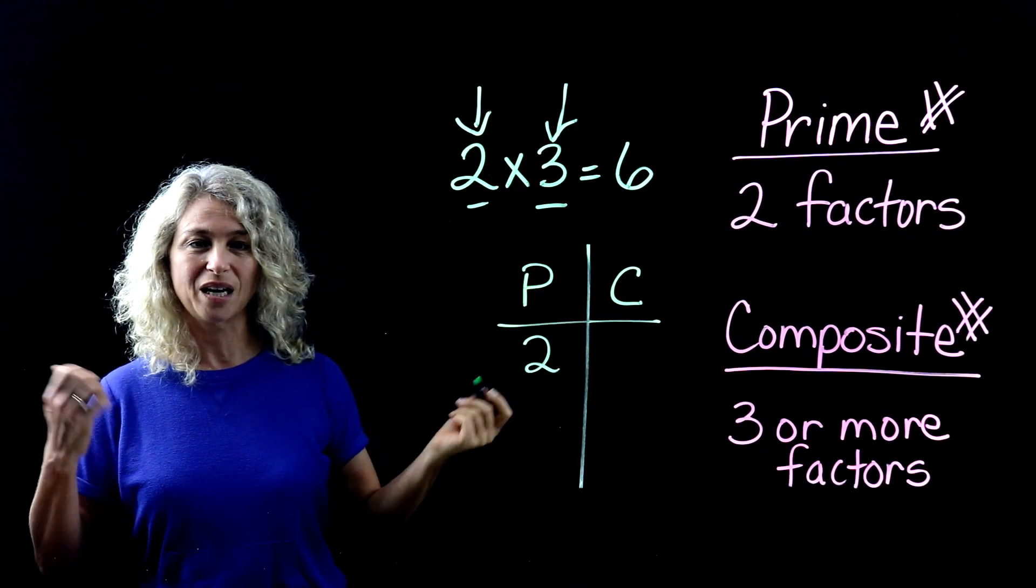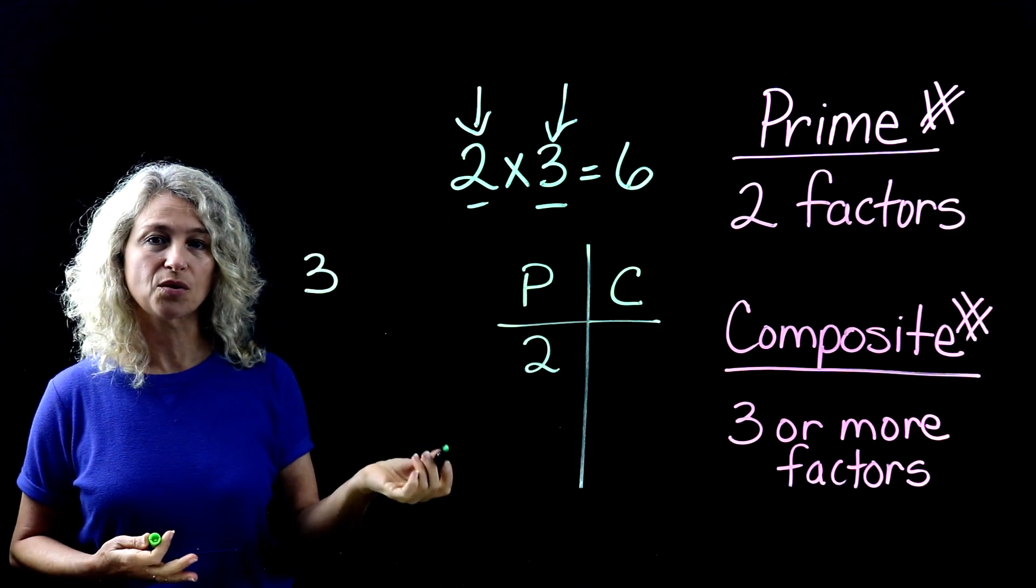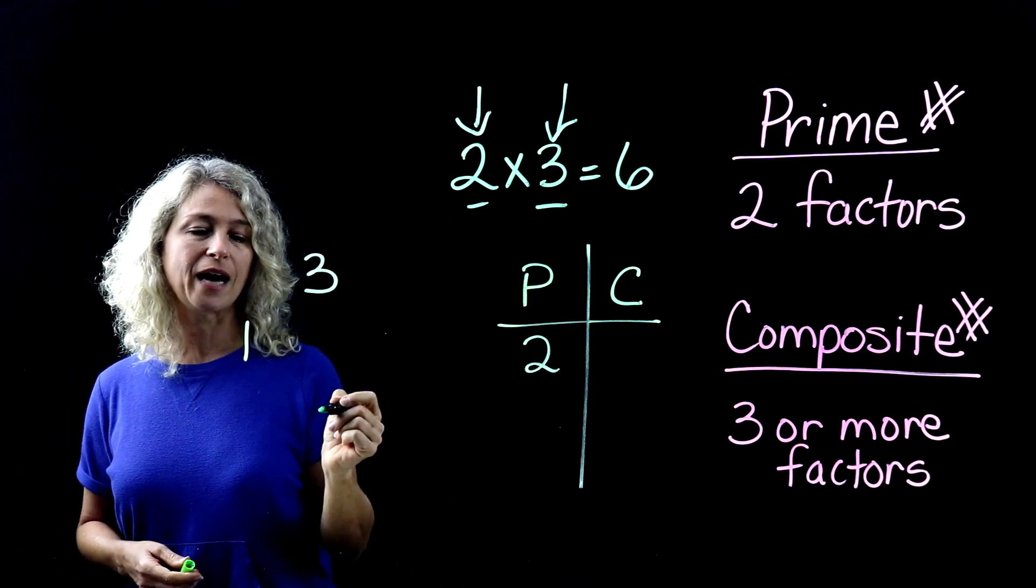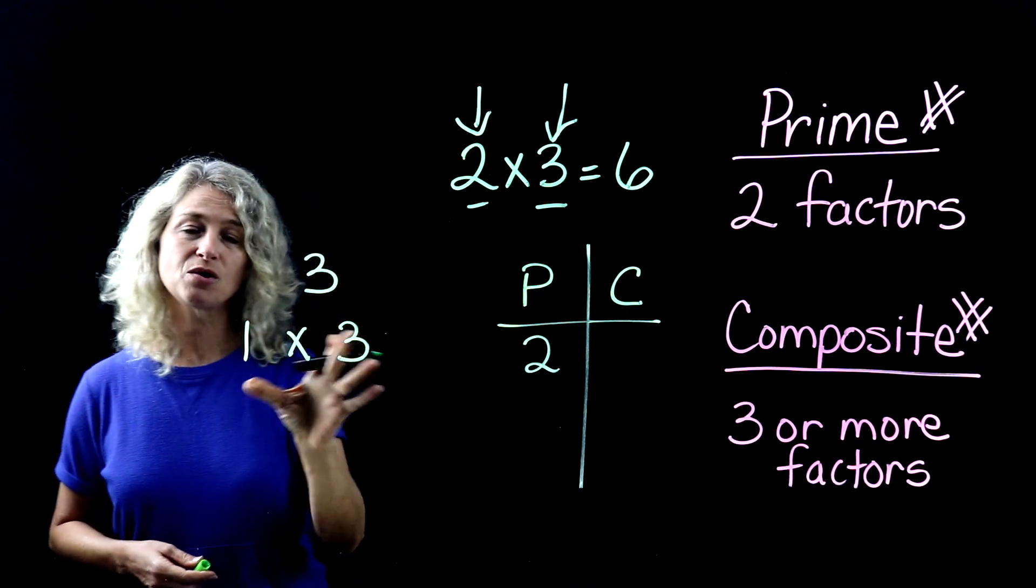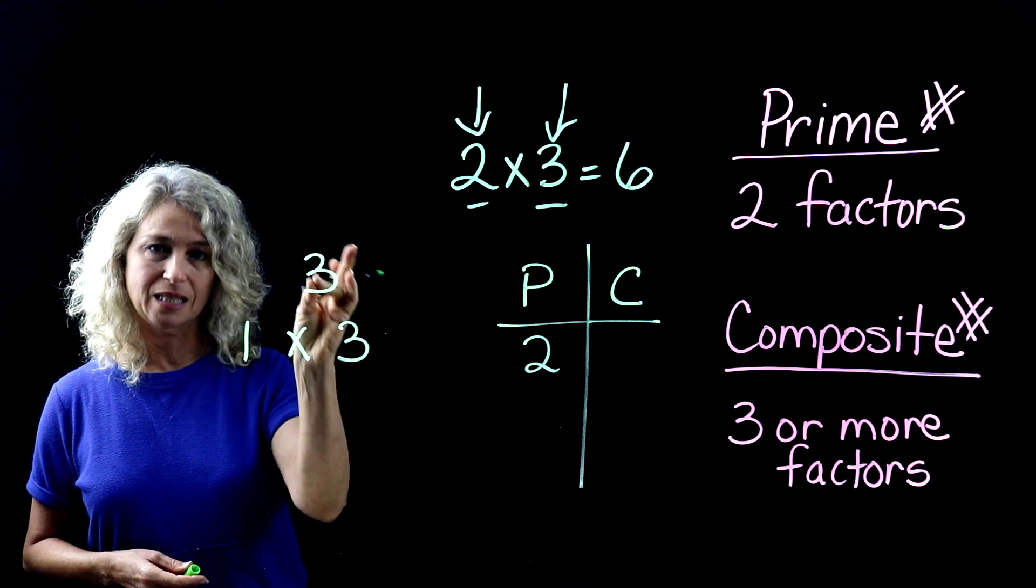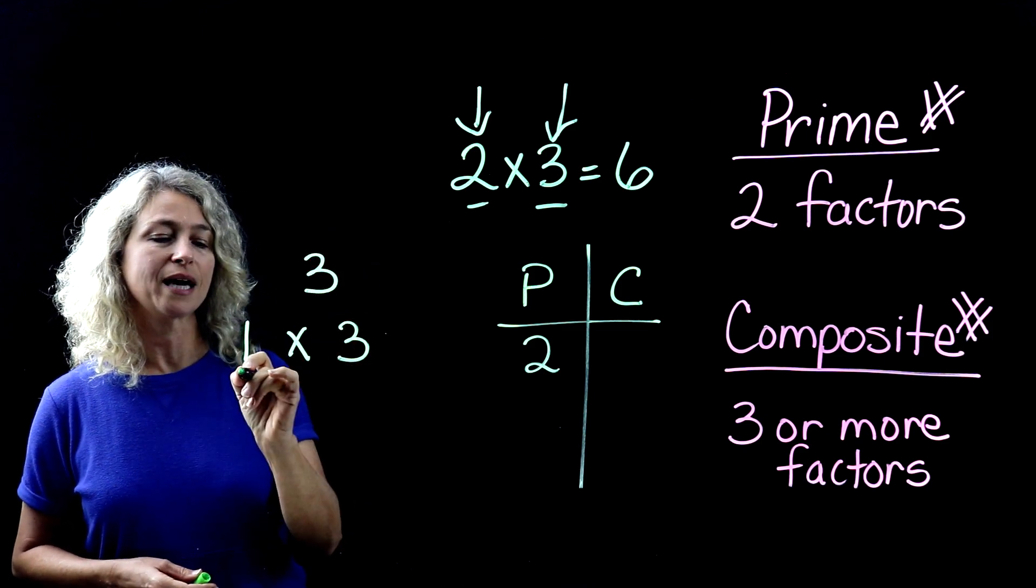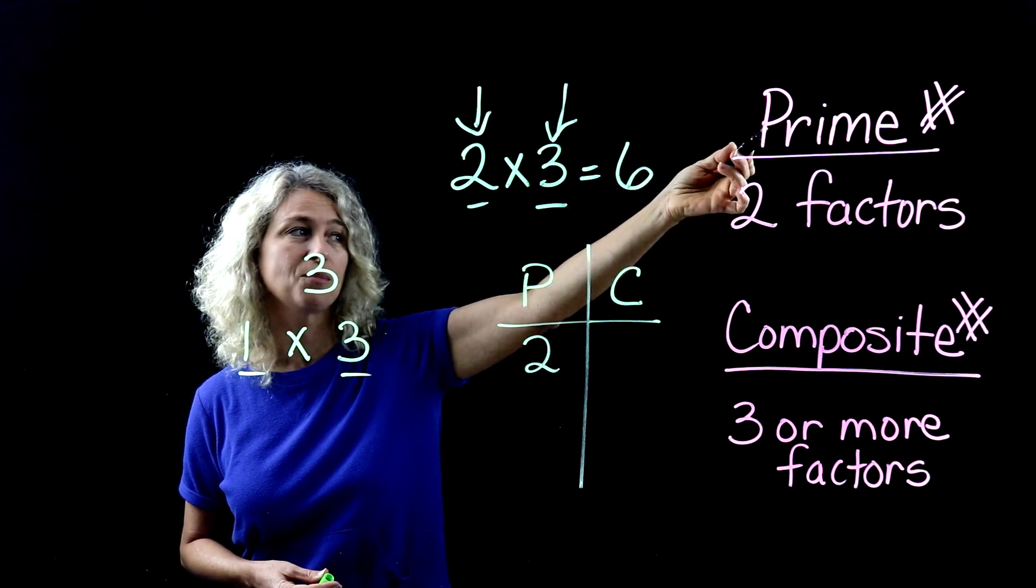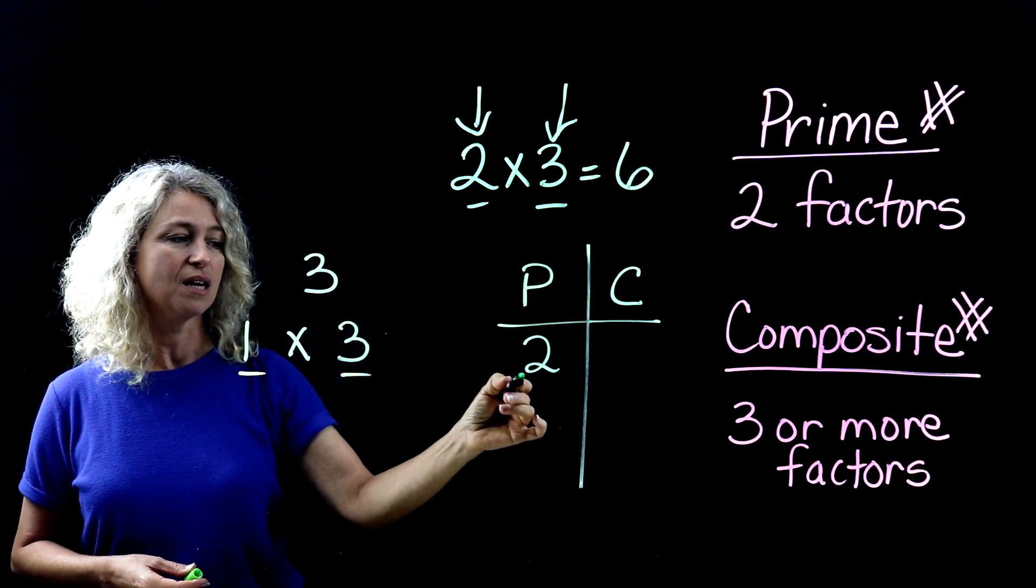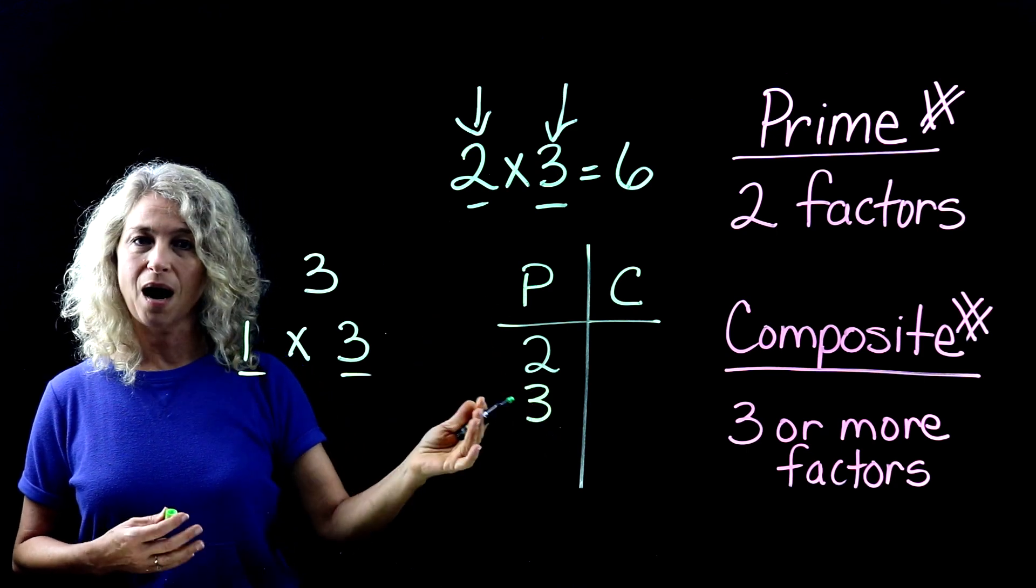Let's look at three. The number three. List out your factors for three. One times three. And those are the only numbers that you can multiply to get to three. So that is one factor, two factors. And the definition of a prime number is it has two factors. So it is also listed under prime.